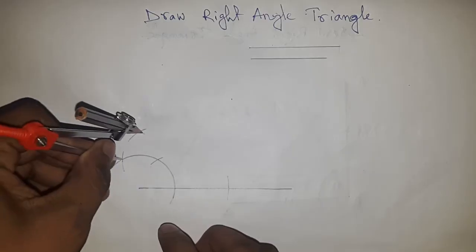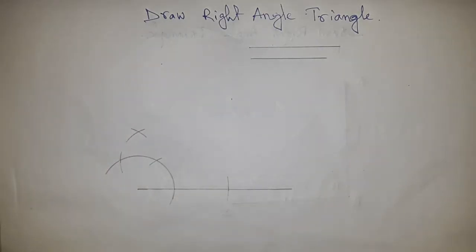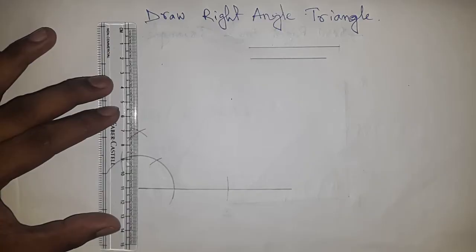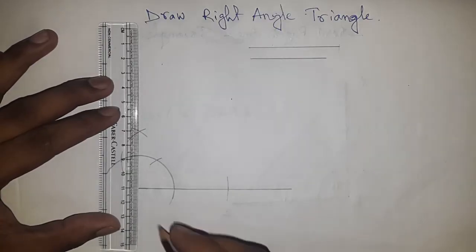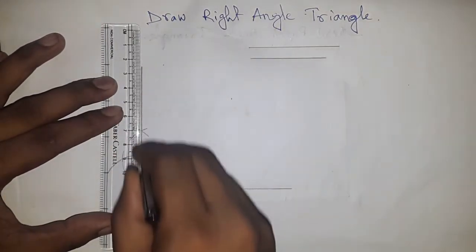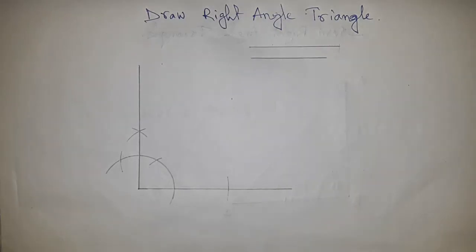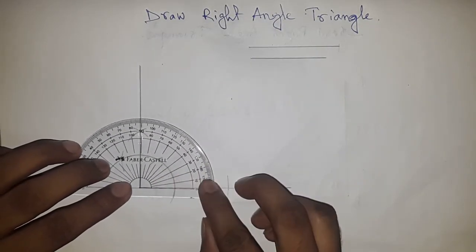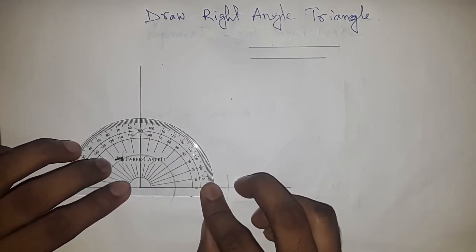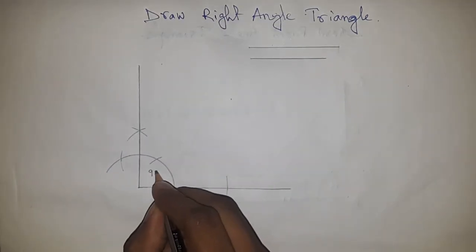Cut the curve now. Now joining these two points. Now checking whether it is 90 or not. So it is absolutely correct 90 degree.